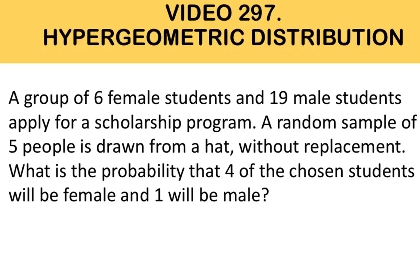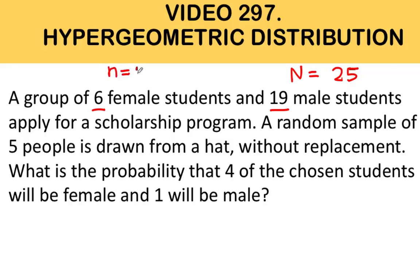Let's analyze the situation. It is mentioned that there are six females and 19 male students, so our big N here is 25 students — that's our population size in this problem. A random sample of five people, that is our small n, is drawn from a hat without replacement.